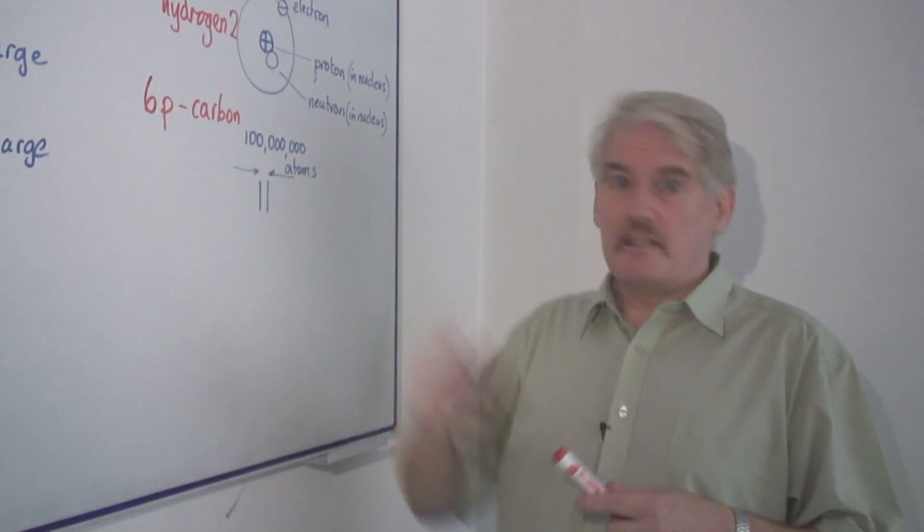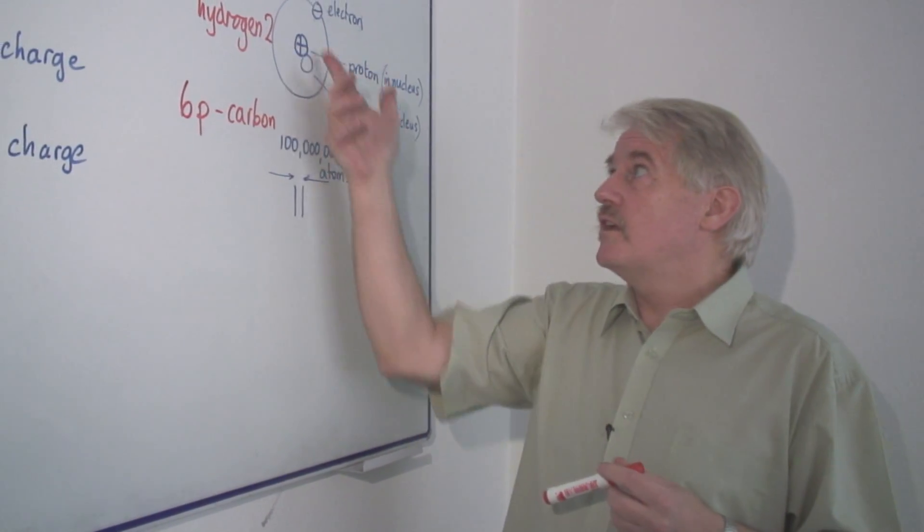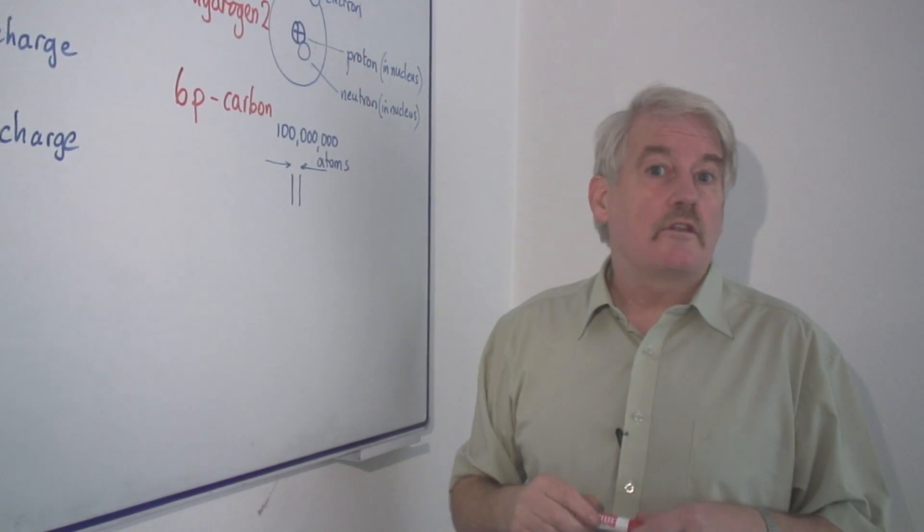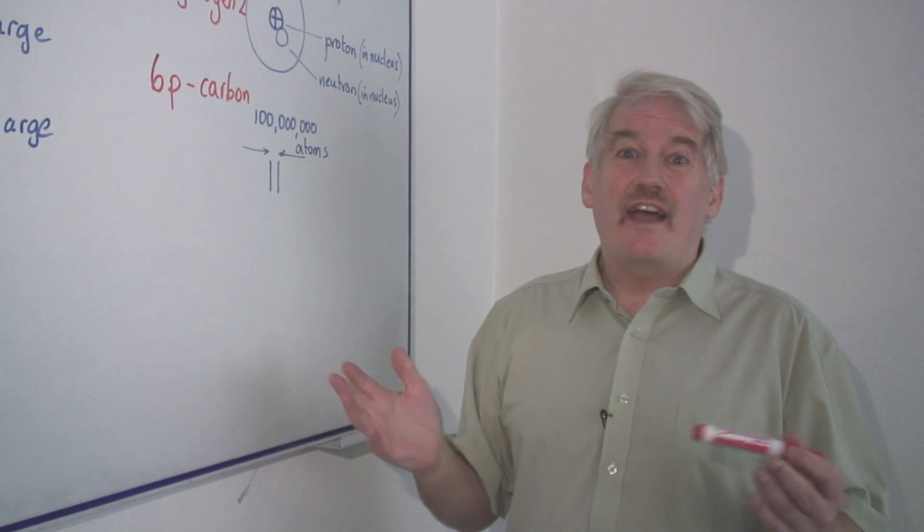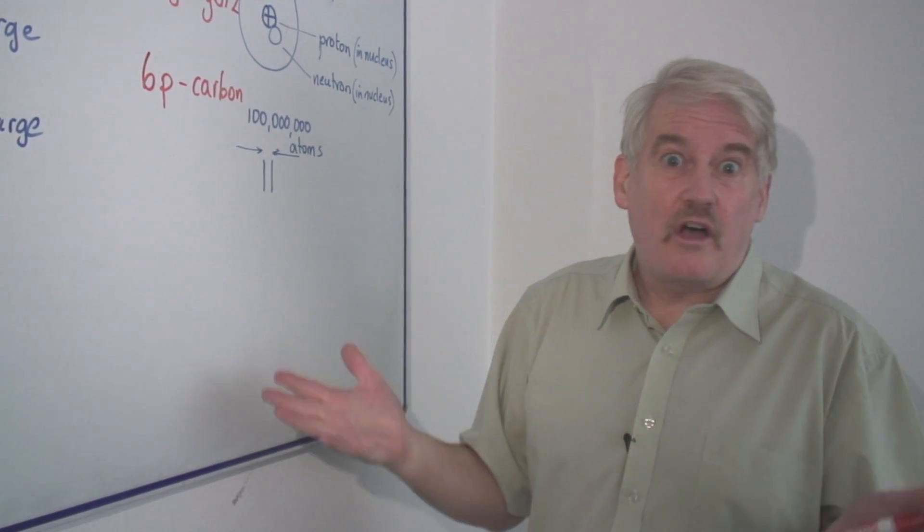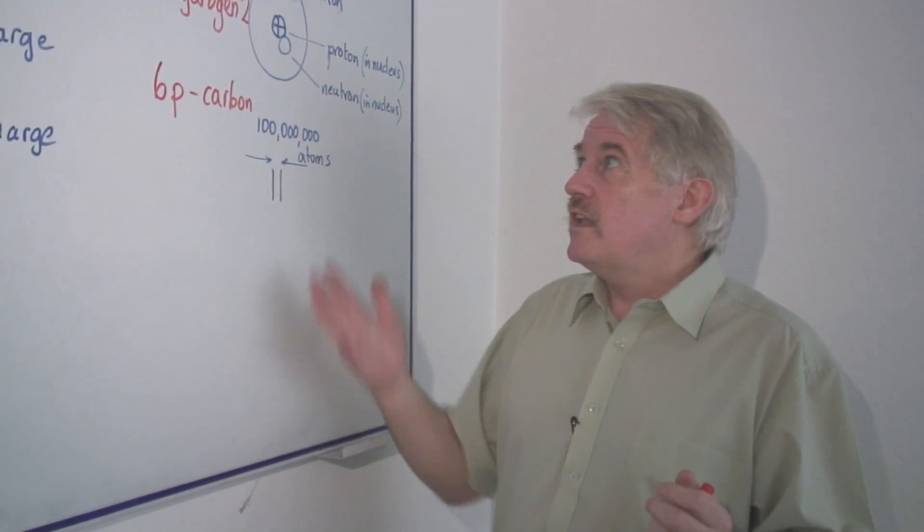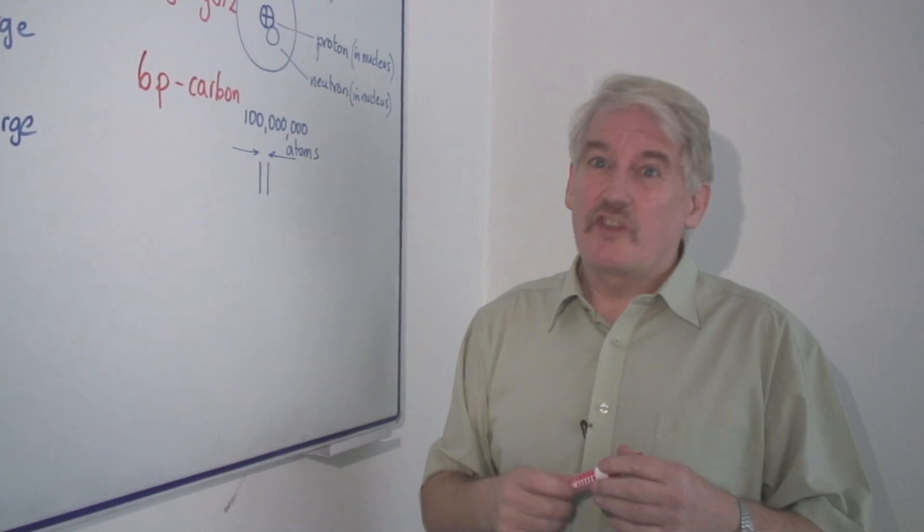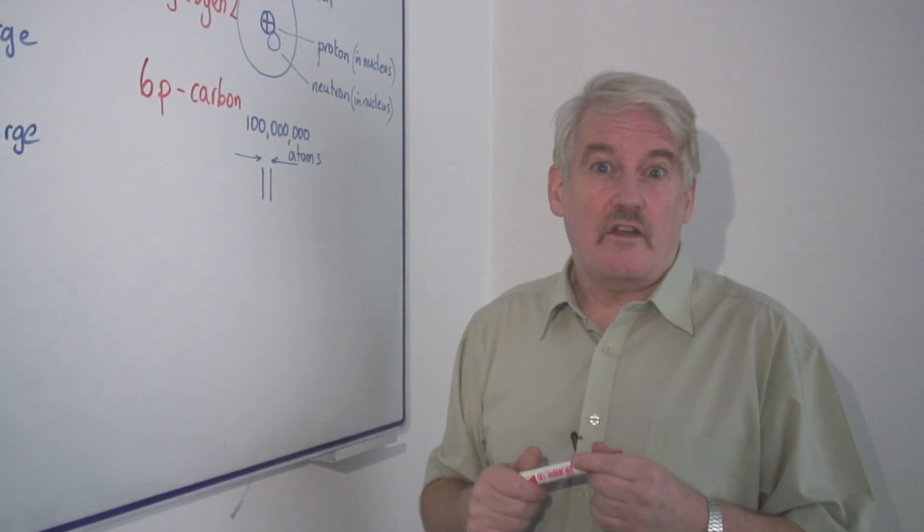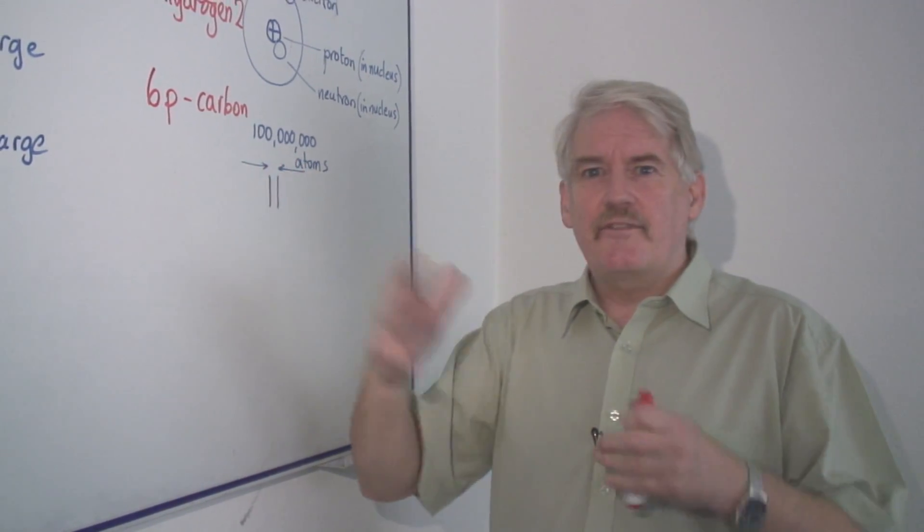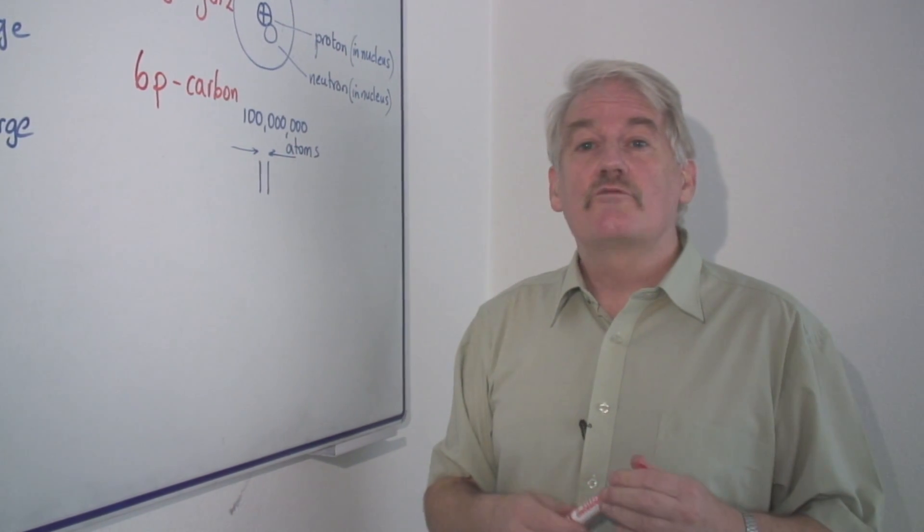In fact, the maximum number of protons you can have in a nucleus is around a hundred. Any more than that, and the thing just falls apart far too quickly. Even if it has a hundred, it's still not very stable and doesn't last long. In that case, if it's not stable, we say it is radioactive.